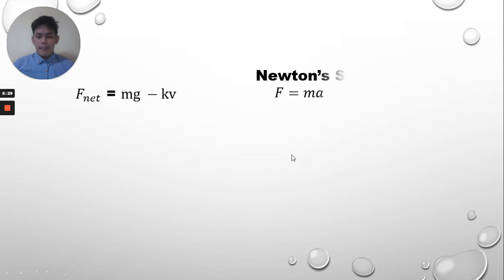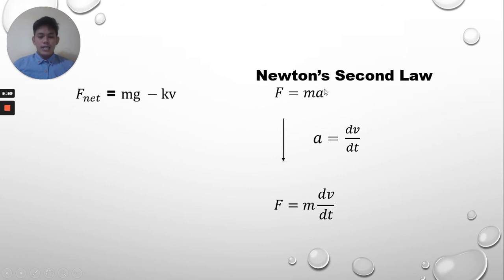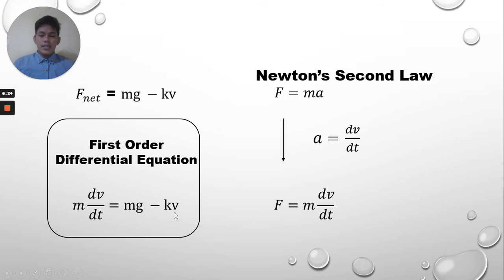Applying Newton's second law of motion — force equals mass times acceleration — and taking the derivative of acceleration, we get dv/dt, the derivative of velocity with respect to time. Replacing acceleration with dv/dt, our first-order differential equation becomes: m(dv/dt) = mg − KV.